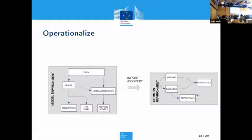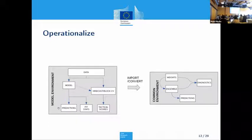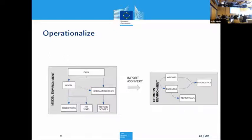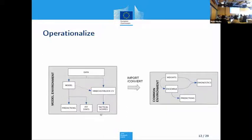How do we operationalize this? The idea was that there are things you cannot do in a single environment. Different models have their own ways of computing things and bringing in variance. Within the environment of the model, you need to be able to compute things that can then be used to compare models — predictions, statistics, tactical scores. You want to compute those statistics within the environment of the model, not the score itself, because the score has to be done across the models.